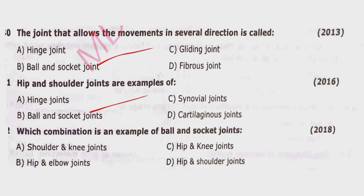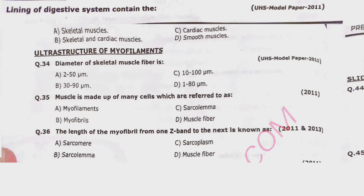Question 32: Which combination is an example of ball and socket joints? Options: shoulder and knee joints, hip and elbow joints, hip and knee joints, or hip and shoulder joints. Correct option is delta — hip and shoulder joints.